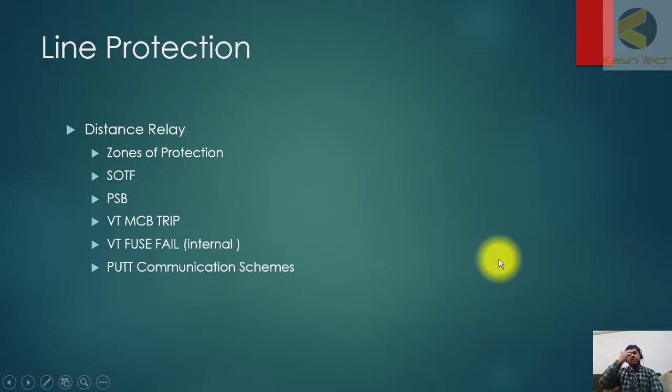Now it moves to the line protection. The most important protection is distance protection. It consists of zones of protection, also switch-on-to-fault, power swing blocking, VT MCV trip, VT fuse fail, and communication schemes.